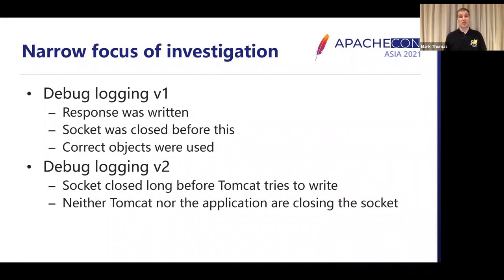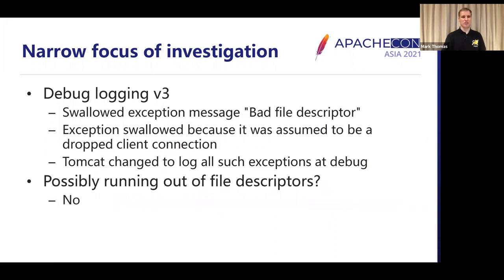Debug logging version two confirmed that the socket was closed way before Tomcat tried to write — it was nothing to do with the write at all. But it also showed us that neither Tomcat nor the application were closing the socket, so things were just a little bit strange. With debug logging version three, I wrapped every method of the socket class and was basically logging entry and exit. And what that showed us was we were getting an exception message on write — an IOException with the message 'bad file descriptor'.